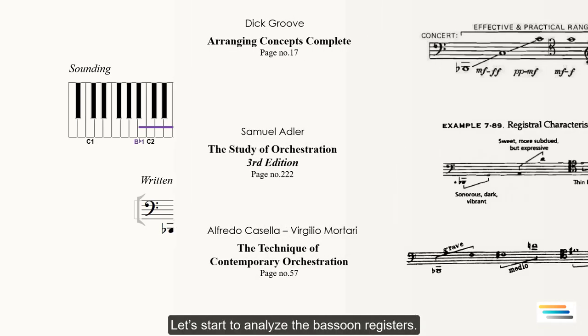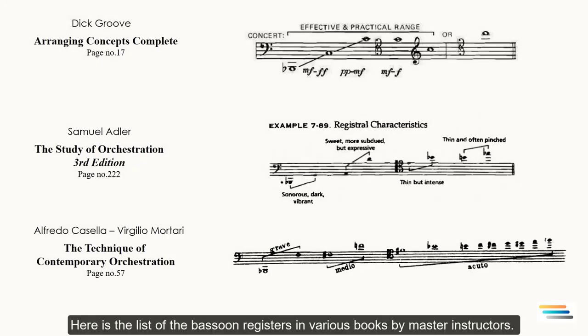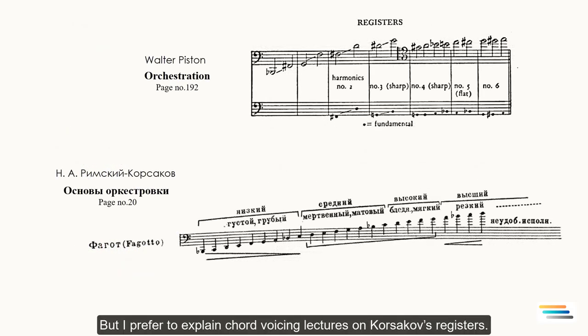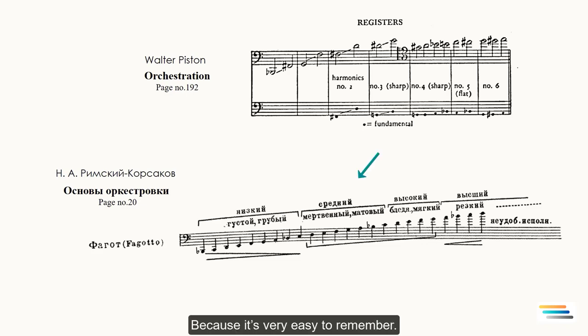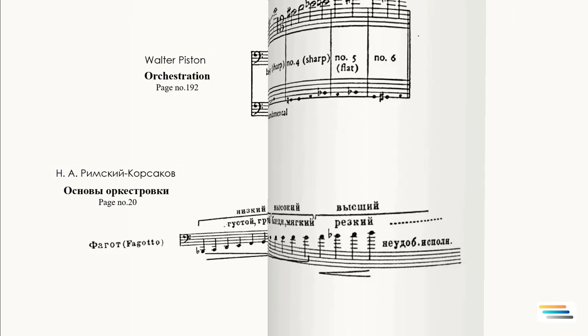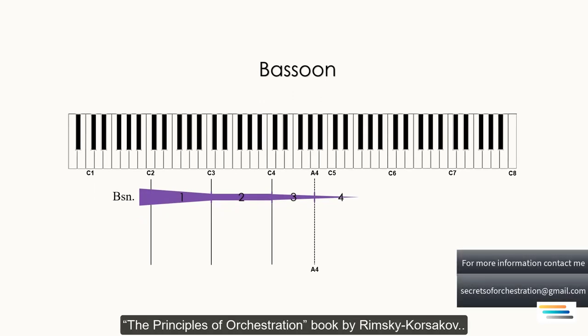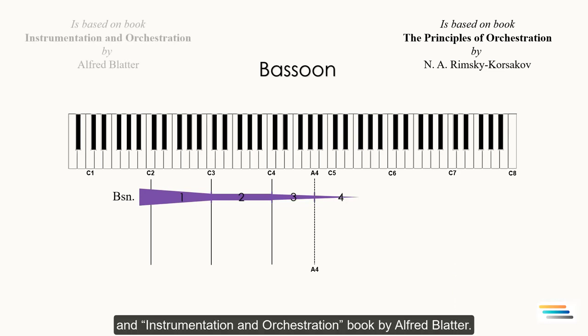Let's start to analyze the bassoon registers. Here is a list of the bassoon registers in various books by master instructors. As you see each instructor has their own approach about the bassoon registers. But I prefer to explain chord voicing lectures on Korsakov's registers because it is very easy to remember. For clarity I made a graphical scheme which is based on two books: The Principles of Orchestration by Rimsky-Korsakov and Instrumentation and Orchestration by Alfred Blatter.